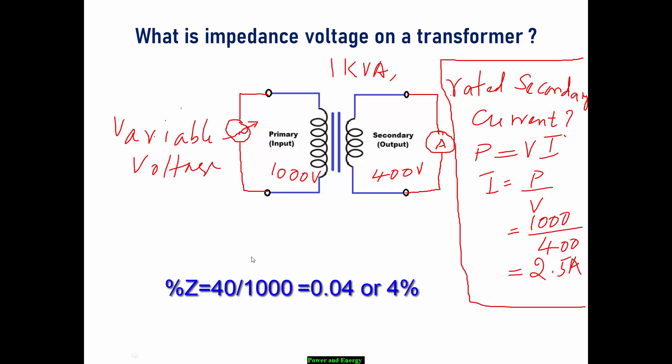Impedance voltage of a transformer is the ratio between two different voltages. Even though it is the ratio between two different voltages, it is represented in terms of impedance. This is actually impedance of the transformer.